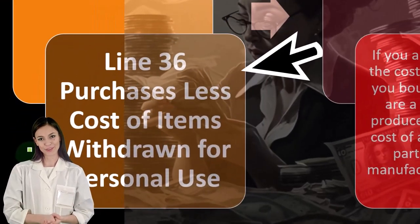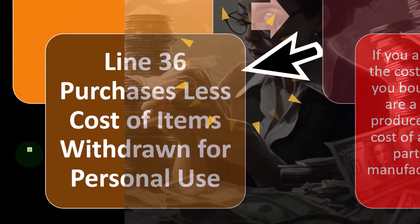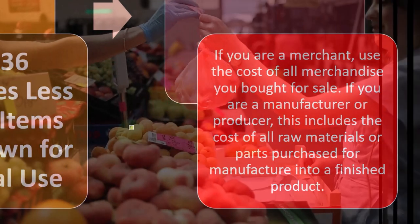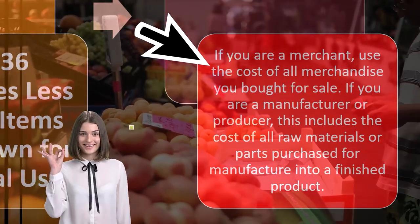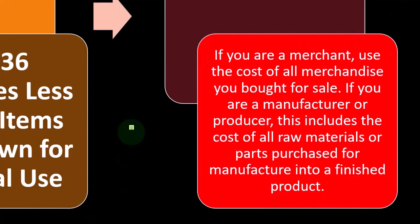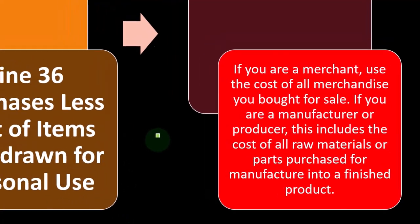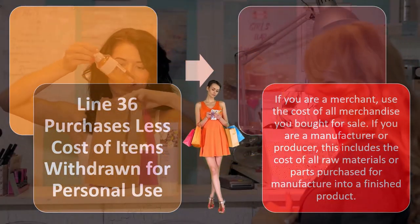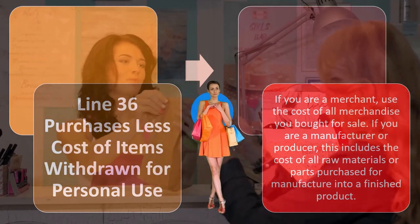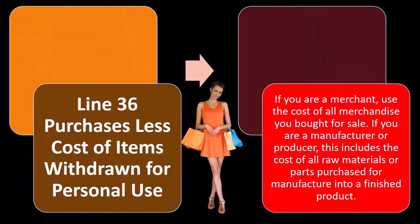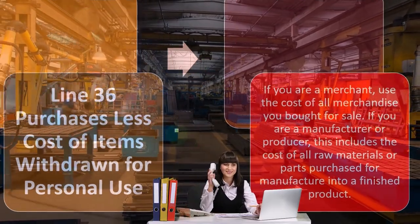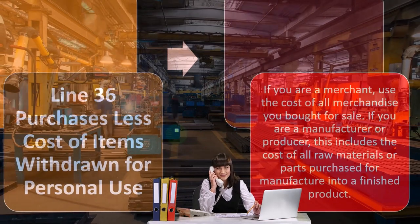Line 36 — purchases less cost of items withdrawn for personal use. If you are a merchant, use the cost of merchandise you bought for sale. If you are a manufacturer or producer, this includes the cost of all raw materials or parts purchased for manufacture into a finished product. If you're just buying inventory and selling it, it's fairly straightforward — you put the cost that you purchased it for.